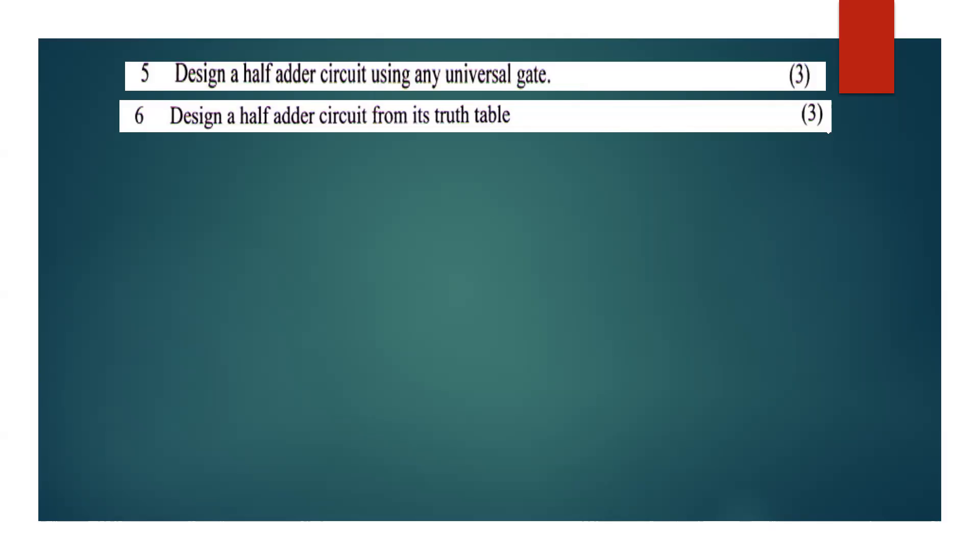The half-adder is basically a circuit that adds two binary digits. There are two input bits. The outputs are a sum bit and a carry bit. Now we have to define the inputs.